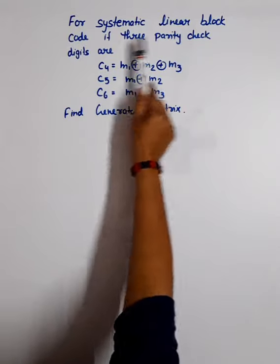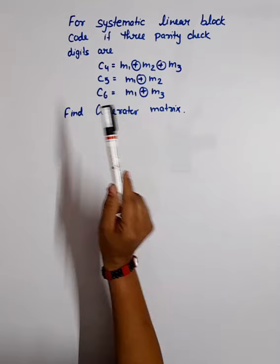In this question for systematic linear block code, if 3 parity check bits C4, C5, C6 are given, find the generator matrix.